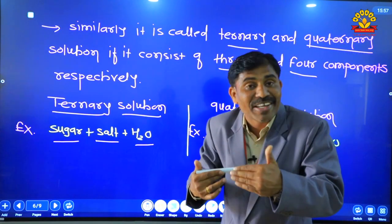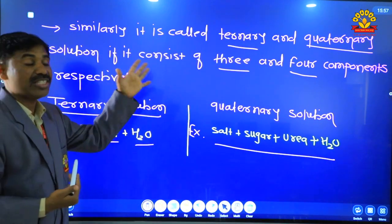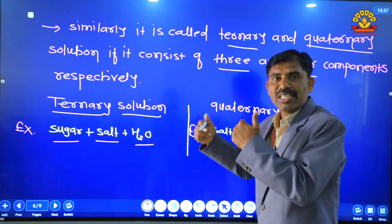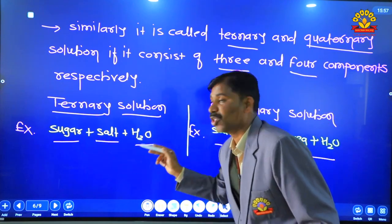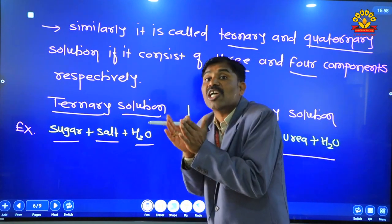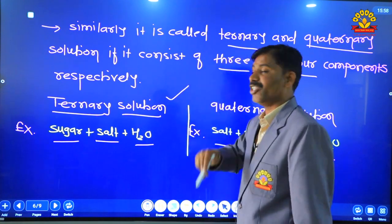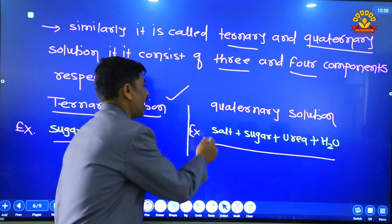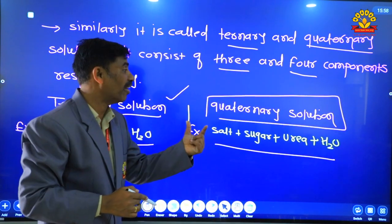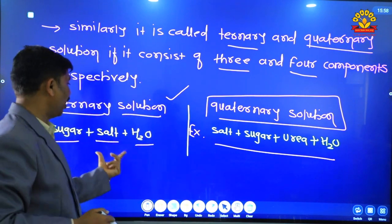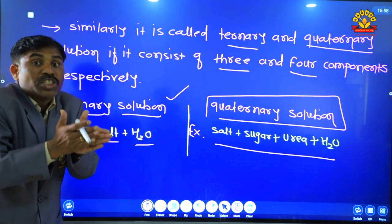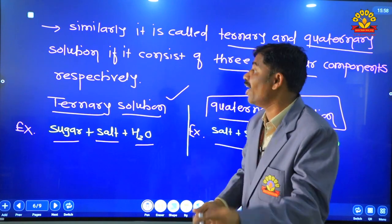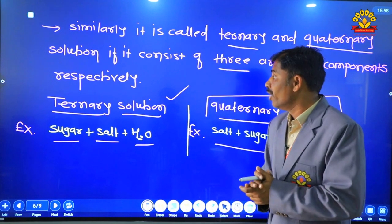Similarly, it is called ternary and quaternary solution if it consists of three and four components respectively. Jab teen components hoon — sugar plus salt plus water — toh use hum ternary solution kehte hain. Aur jab salt, sugar, urea aur water mix ho jaate hain toh use hum quaternary solution kehte hain. Solution banane ke liye at least do components ki zaroorat hoti hai.